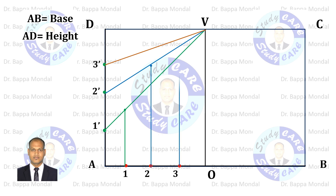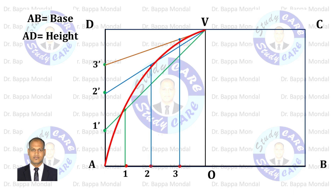Now connect all intersecting points using a French curve. So we get half of the parabola.